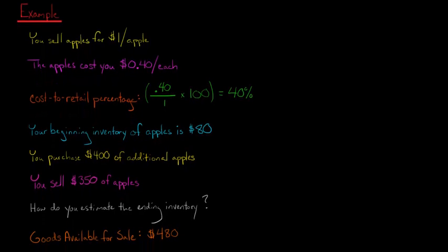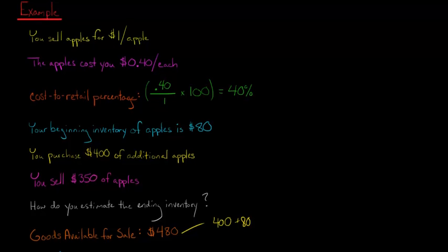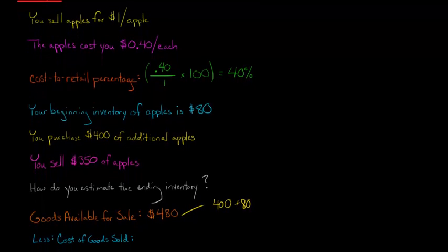And that's where this cost to retail percentage is going to become important. But first, we need to say, how many apples were available for sale during the period? Now we started with $80 worth of apples, and then we purchased $400 worth. So if we add those two together, $400 plus $80, that gives us $480, which is the total amount of apples or goods that were available for sale during the period.